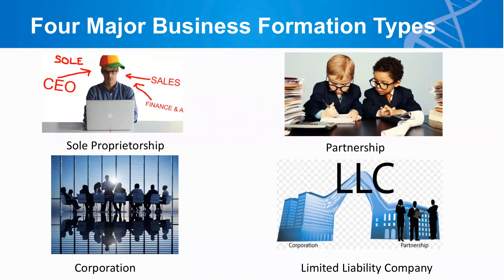I'm going to start by outlining four major business formation types — the most common ones. The first type of business you can sometimes hear about is a sole proprietorship. As this would sound, this is one owner and one operator. It doesn't mean that's the only person working at the company, but typically only one owner is involved.